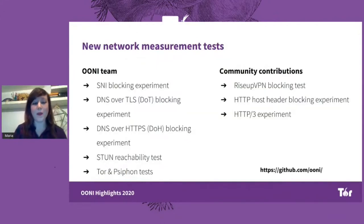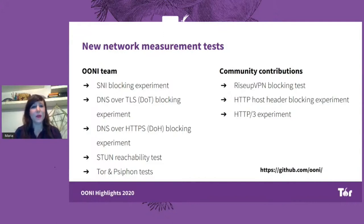The OONI Probe apps are powered by a measurement engine. Up until recently, our measurement engine was written in C++. This year, we deprecated our C++ measurement engine and rewrote it in Go. This is really exciting because it makes the writing of new network measurement tests so much easier and faster. Apart from the new Tor and Psiphon tests, we've also written a number of other new tests that we'll be shipping as part of our apps over the next year.